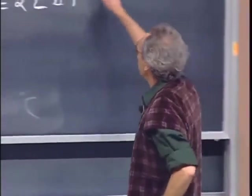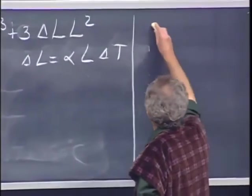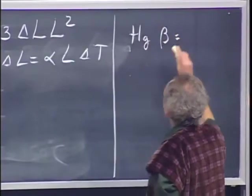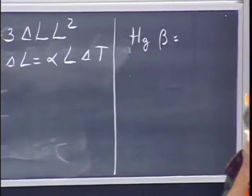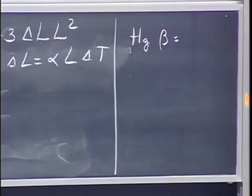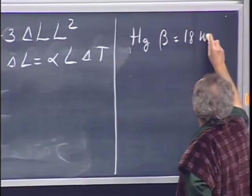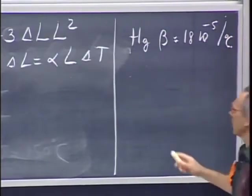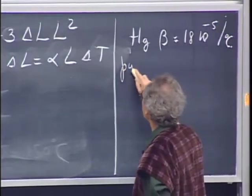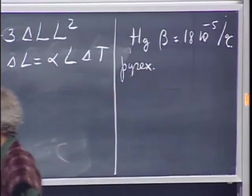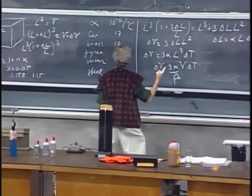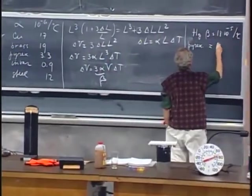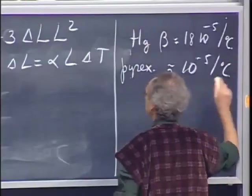So you will say, well, big deal. I mean, why are you talking about beta? Because if we have the values for alpha, all we have to do if we go to a volume to make that beta three alpha and we are in business. Well, when you have liquids, in general, you don't find in the tables values for alpha. So when you deal with liquids, for instance, mercury, which is the one that I want to use today, then you find that the cubic expansion coefficient is eighteen times ten to the minus five per degree centigrade.